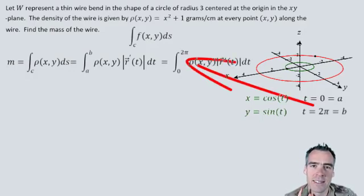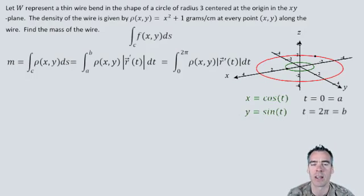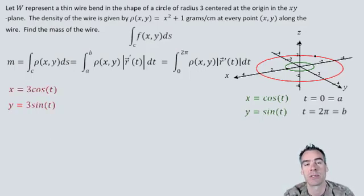But we need this to be a radius of 3, so all we've got to do is multiply our x and y by 3. We have x = 3cos(t), y = 3sin(t), and our position vector r(t) is just going to have those x and y components plugged in.